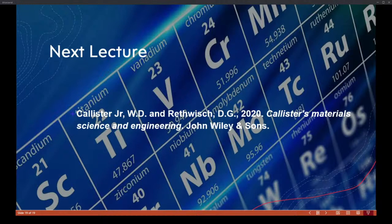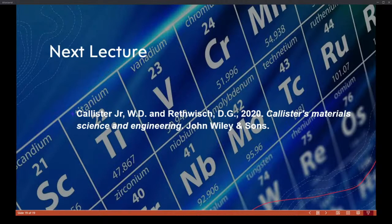A lot of materials have incredible properties but we could never put them in the body because they would leach ions — especially metals. Most metals used in the body have what we call a passivation layer. What happens is the body doesn't actually react with the metal itself — it reacts with the oxide layer that forms on top, and that protects the metal from being degraded and releasing ions into the body. Titanium is a prime example because it forms a very tight, well-structured oxide layer.